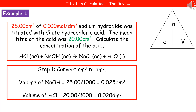The first thing we should notice is that both of those volumes are given in centimetres cubed. So, step one: convert our centimetres cubed to decimetres cubed by dividing by 1,000. Our volume of sodium hydroxide would be 25 divided by 1,000 to give us 0.025 dm³. And our hydrochloric acid is 20 divided by 1,000, giving 0.020 dm³.